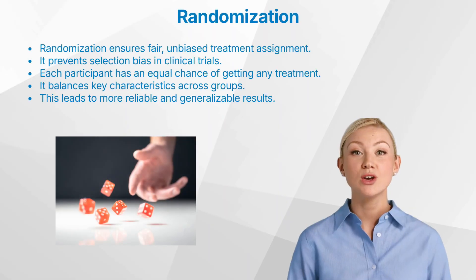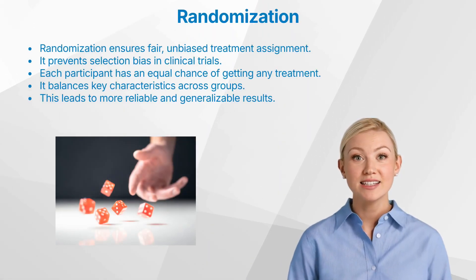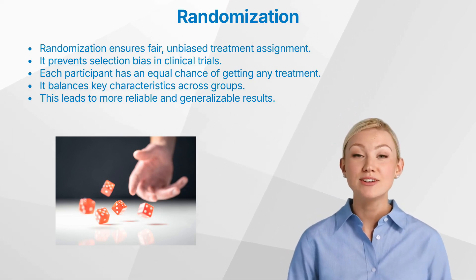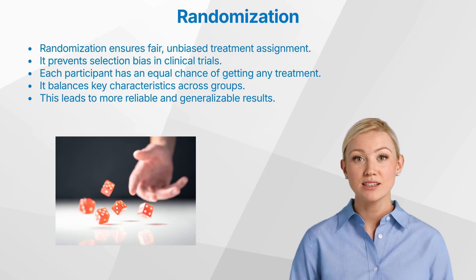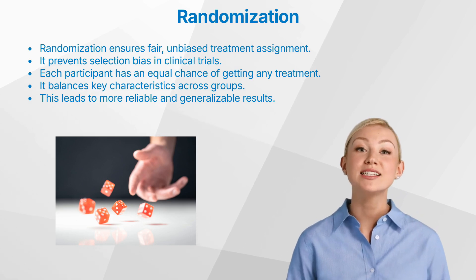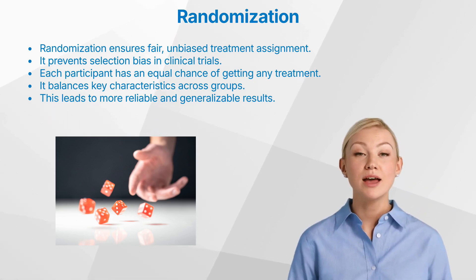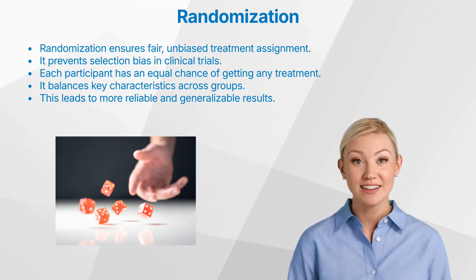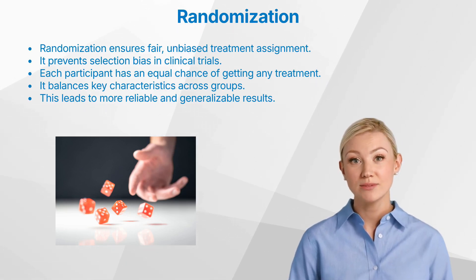Let us start with understanding why randomization is needed. Imagine you're running a clinical trial to compare different treatments — this could involve two different drugs, or maybe the same drug at different doses. No matter the setup, we need to assign each patient to a treatment group. But how do we do that in a way that's fair, unbiased, and scientifically sound? The answer is randomization.